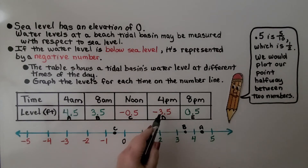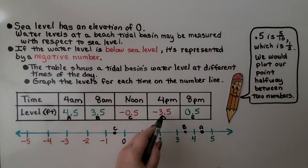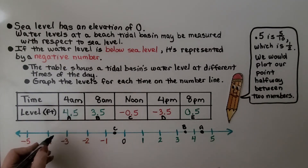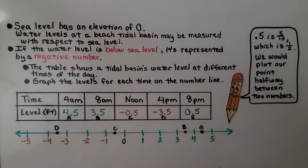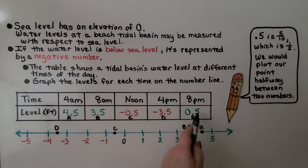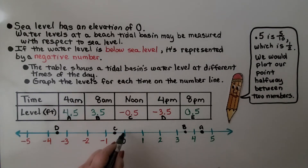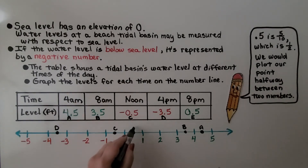Negative 3.5 — 3 and 5 tenths — would be farther left than negative 3. It would be in between negative 3 and negative 4, right here, and we can label that D. E is positive 5 tenths, so that's going to be in between 0 and 1 — that's E.